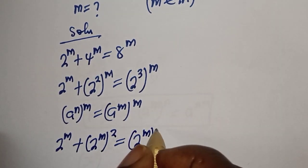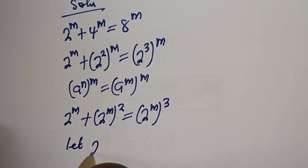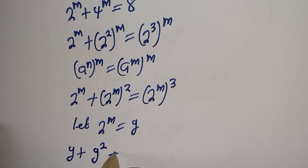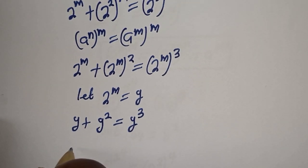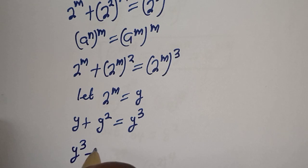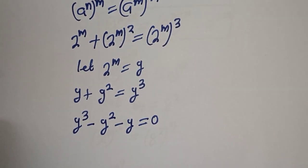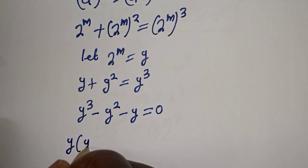Then this is 2 raised to power m, plus 2 raised to power m squared, is equal to 2 raised to power m, raised to power 3. Let 2 raised to power m equal to y. Then y plus y squared is equal to y raised to power 3, and we can rearrange this: y cubed minus y squared minus y is equal to 0.